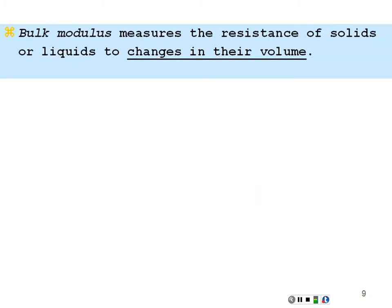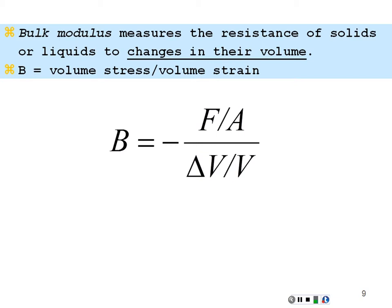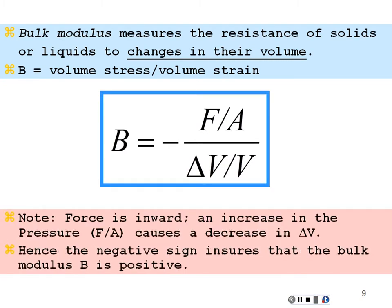The bulk modulus is the resistance of solids or liquids to changes in their volume. It equals the volume stress over the volume strain — if we apply a three-dimensional stress on an object and reduce its size, it's that force per area over the change in volume divided by volume. This is the only modulus with a negative sign out front, because if we apply a three-dimensional stress the final volume is less than the initial volume, making delta V negative. To keep the bulk modulus positive, we put a negative sign in front. These are intrinsic mechanical properties of materials — Young's, shear, or bulk modulus can help identify a material.